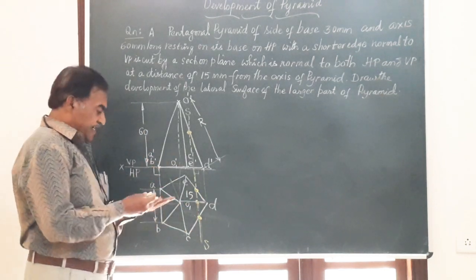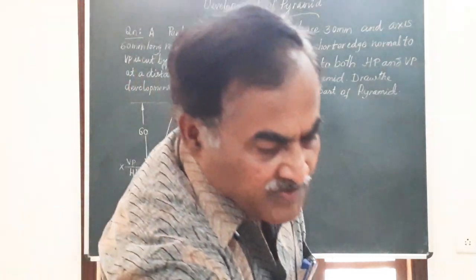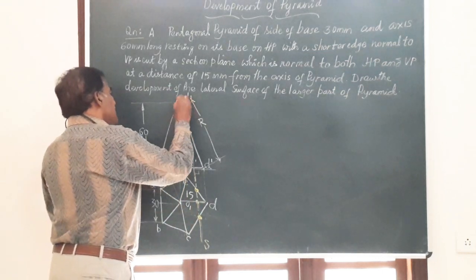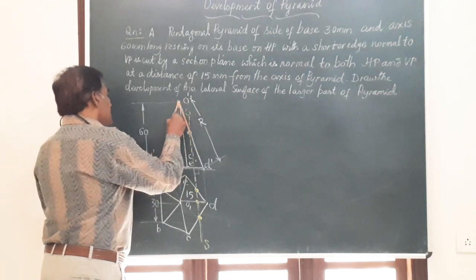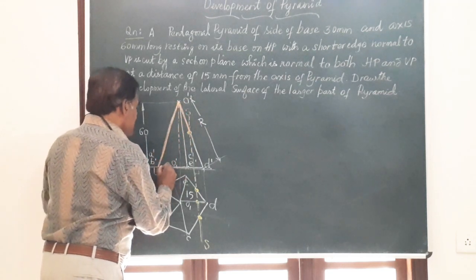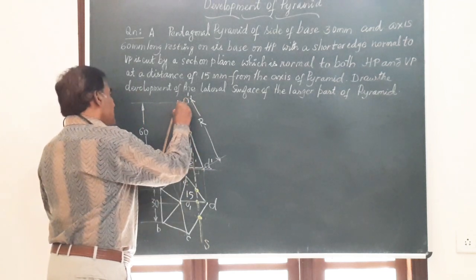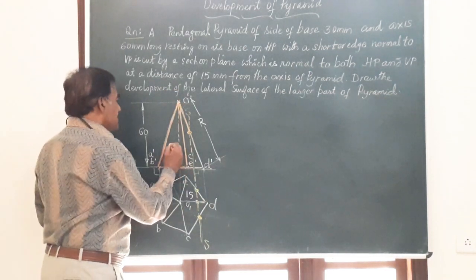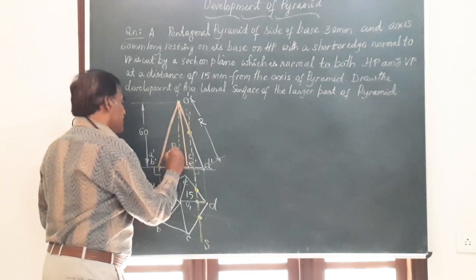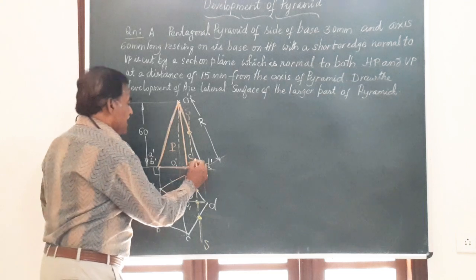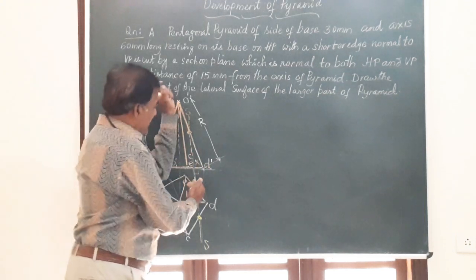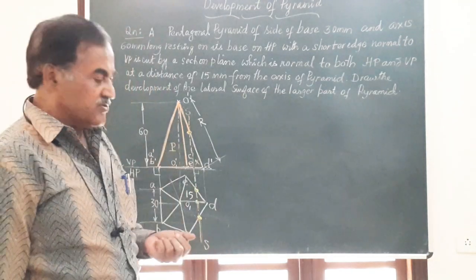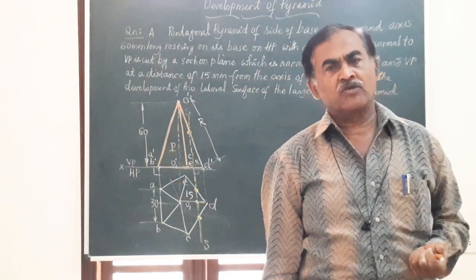Looking at the front view, I mark the portion of the solid that is retained for the purpose of development. The longer edges are retained, as are the base edges up to the section plane. Only a small part from the section plane to the right is removed. I mark this as P — the portion retained for the purpose of development — and this is the part that is removed.